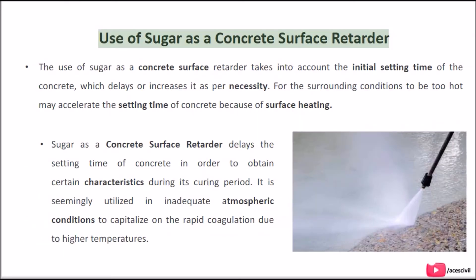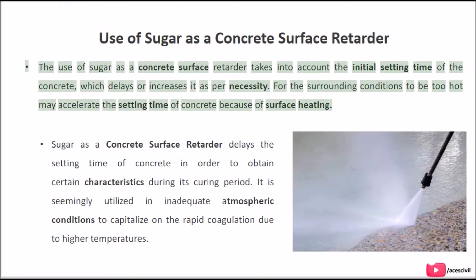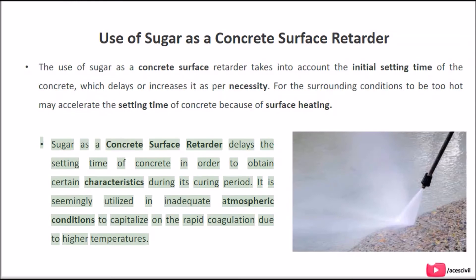Use of sugar as a concrete surface retarder: the use of sugar as a concrete surface retarder takes into account the initial setting time of the concrete, which delays or increases it as per necessity. For surrounding conditions that are too hot, this may accelerate the setting time of concrete because of surface heating. Sugar as a concrete surface retarder delays the setting time of concrete in order to obtain certain characteristics during its curing period. It is utilized in inadequate atmospheric conditions to capitalize on rapid coagulation due to higher temperatures.